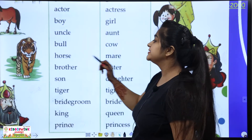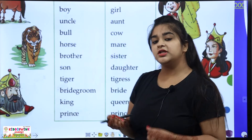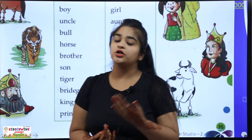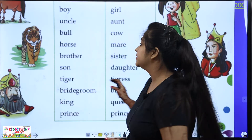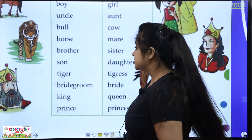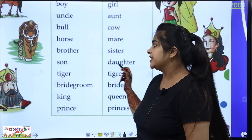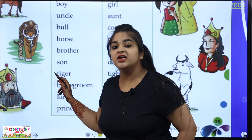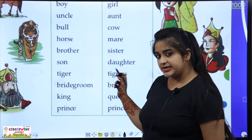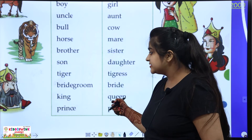Next is horse and mare. Then brother and sister. Son and daughter. Then tiger and tigress.